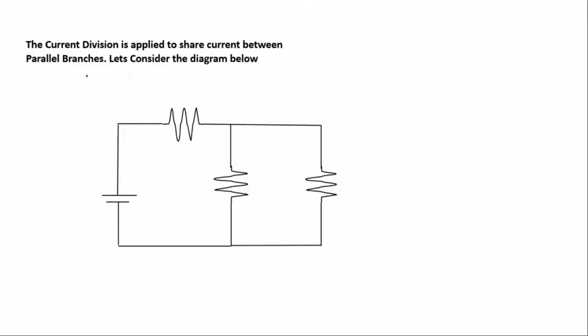One important thing about the current division rule: when a complex diagram is given to you, you try to reduce it into a standard form. You find the total resistance and make sure that at the end you get a simplified diagram before you can find the current of each resistance.